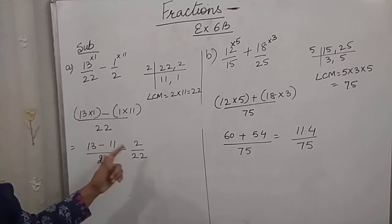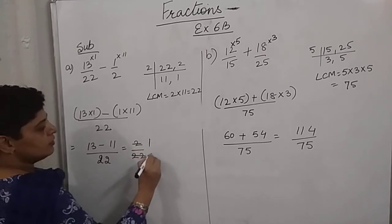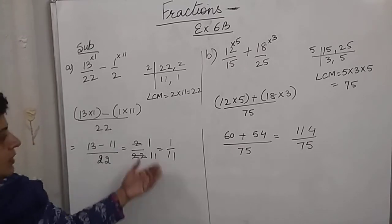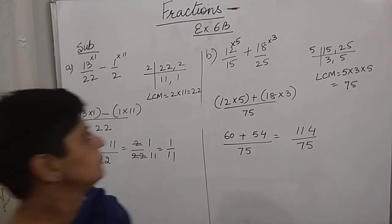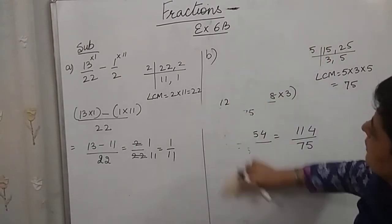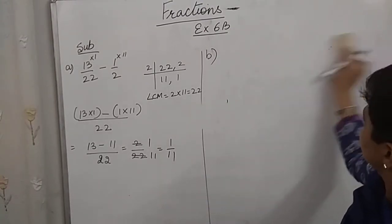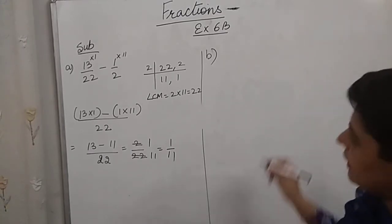We can even simplify because 2 and 22, they are both the factors of 2. 2 into 1, 2 into 11. So this is simplified. So next is 8 by 19 minus 1 by 38.